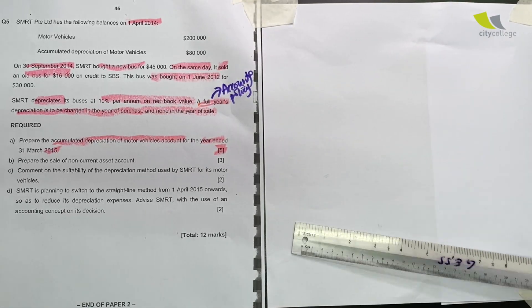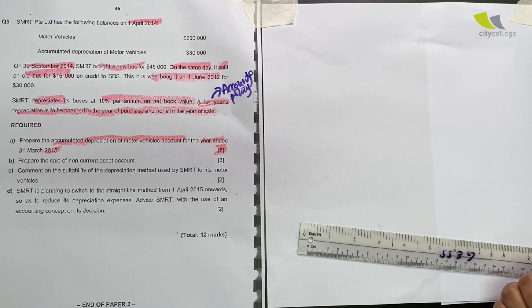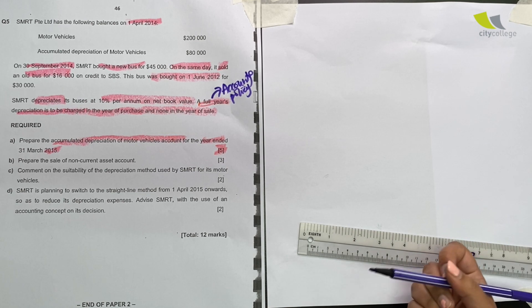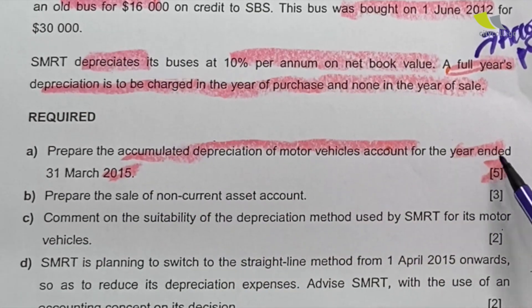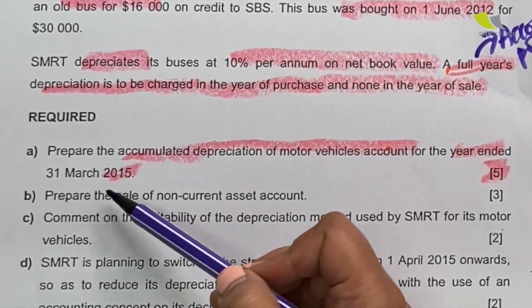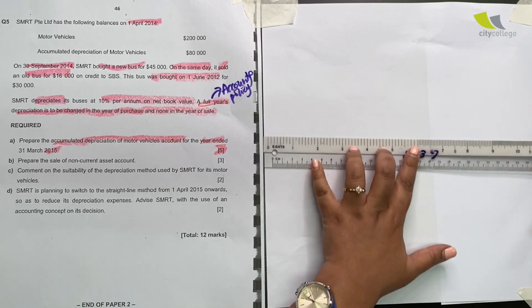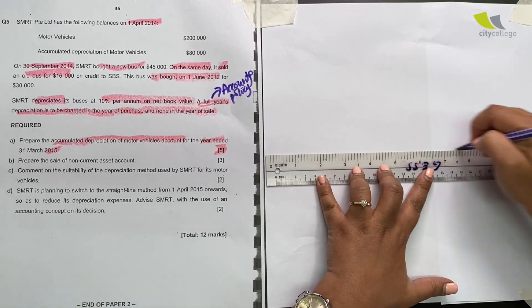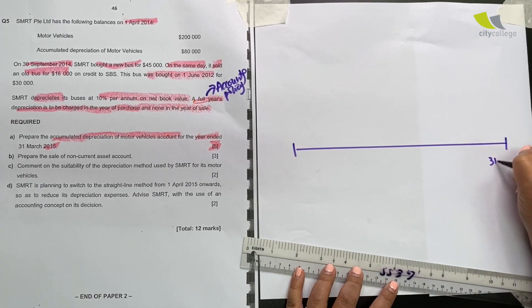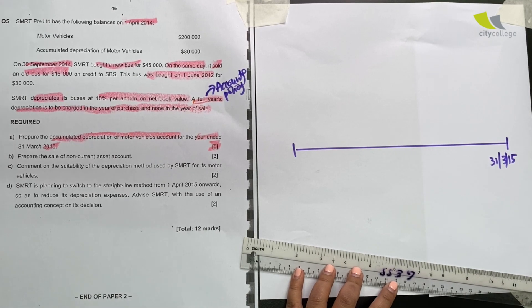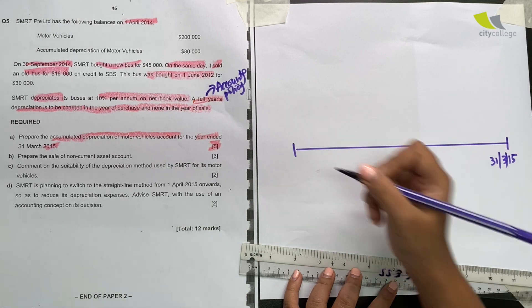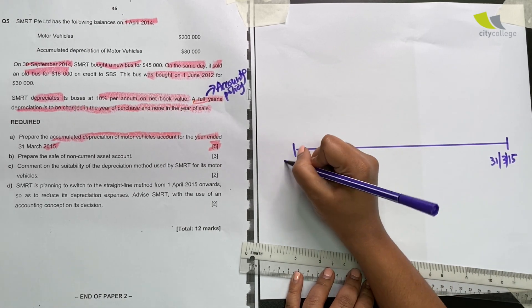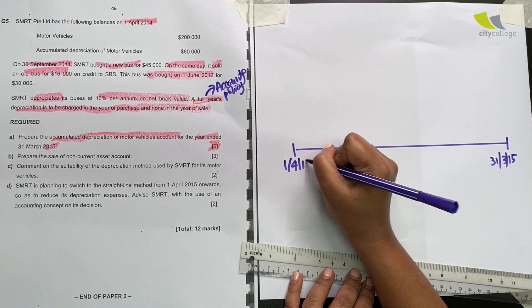Let's begin by drawing a timeline with the dates given to us. So to find out the accounting period, we need to pay attention to the year end of the business. The business's year end is 31st March 2015. When will I start? If the full year is 12 months, I will actually start the year on 1st April 14.